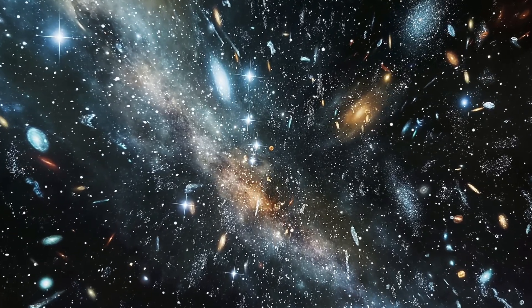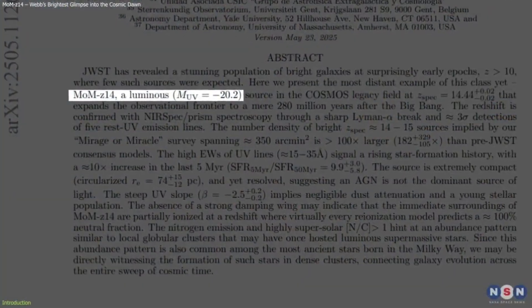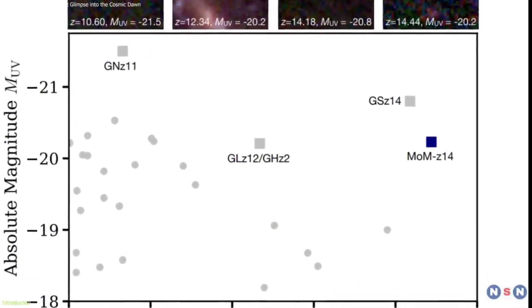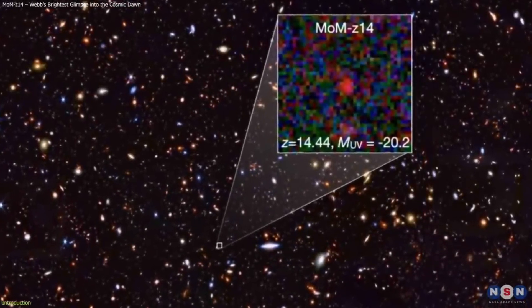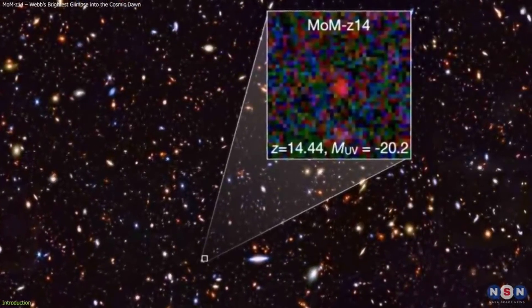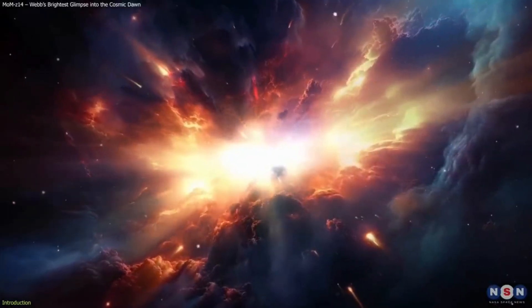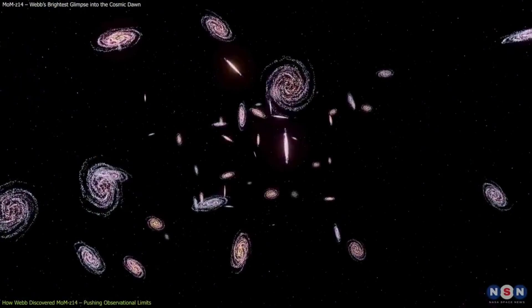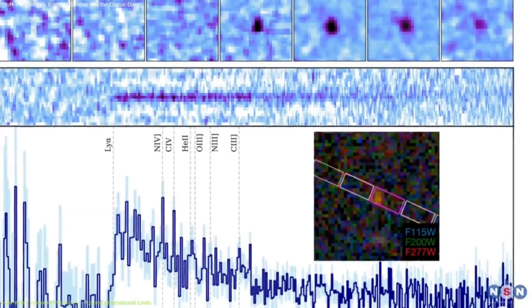Another crucial aspect lies in the star formation rates observed in these galaxies. MOMZ 14 and others exhibit starburst-like behavior, producing stars at a rate dozens or even hundreds of times greater than the Milky Way. How such intense activity could be sustained in such a young galaxy is still a puzzle. Some models suggest rapid accretion of cold gas or feedback loops where supernovae drive gas out only for it to fall back in again, reigniting star formation. Either way, it implies a dynamism not accounted for in current simulations.